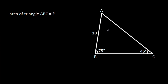In this video, we have been given that angle ABC is 75 degrees, angle ACB is 45 degrees, and AB is 10. Then we have to find the area of triangle ABC.